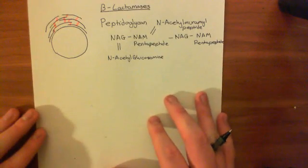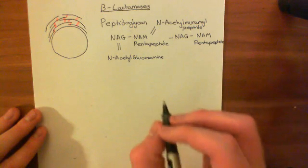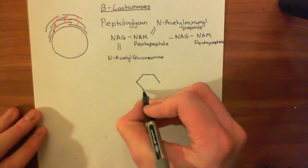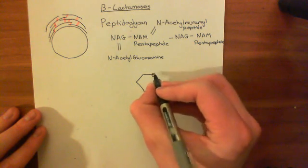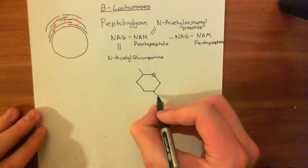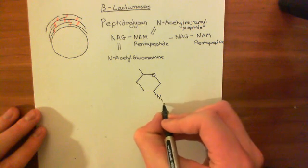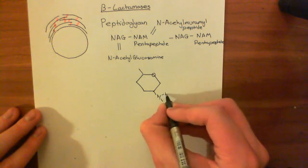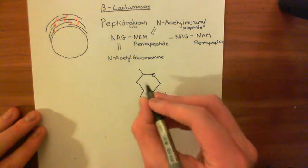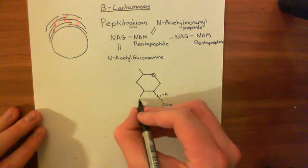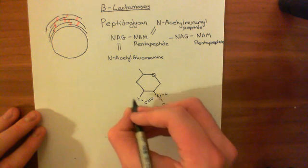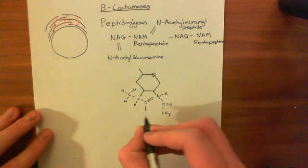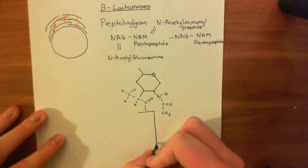Let's briefly go over the structure of the N-acetylmuramyl pentapeptide. It has a six-membered glucose ring with an oxygen, then an amino group linked to an acetyl group — that's the 'acetyl' in N-acetylmuramyl. Off the third carbon of this ring, you have a pyruvate group, which has a carboxylic acid on one end and a methyl group on the other. Coming off this, you have a pentapeptide.